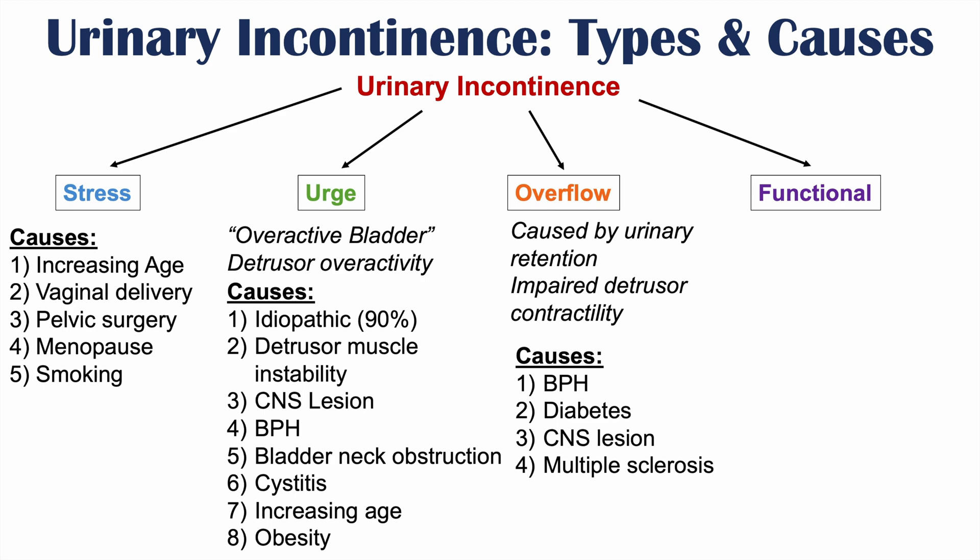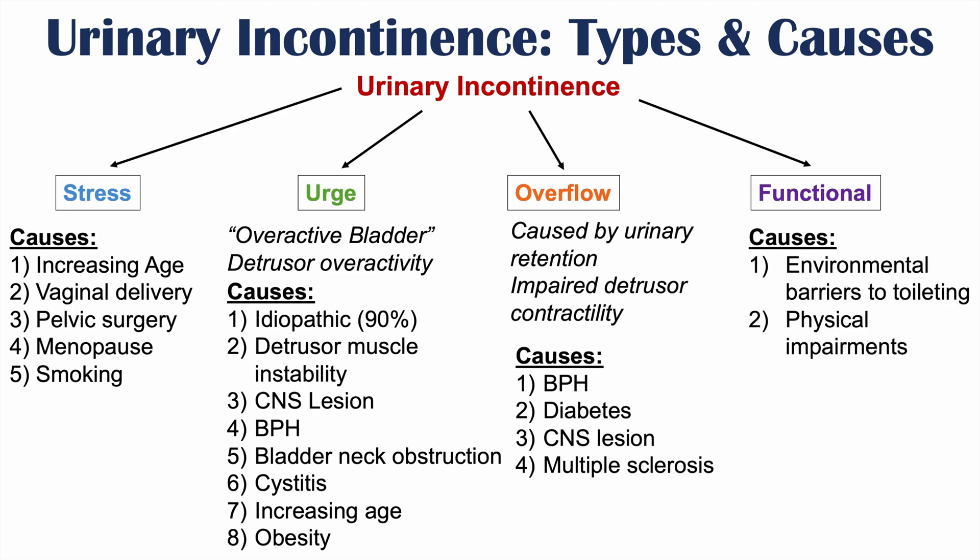Functional urinary incontinence is where a patient is not able to get to the bathroom in time. Some causes include environmental barriers to toileting and physical impairments such as reduced mobility. Essentially, the patient really needs to use the washroom but cannot make it to the toilet in time, resulting in an involuntary loss of urine.